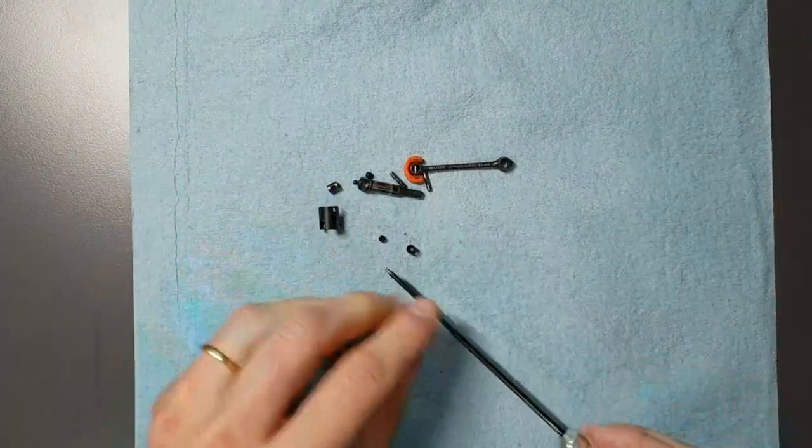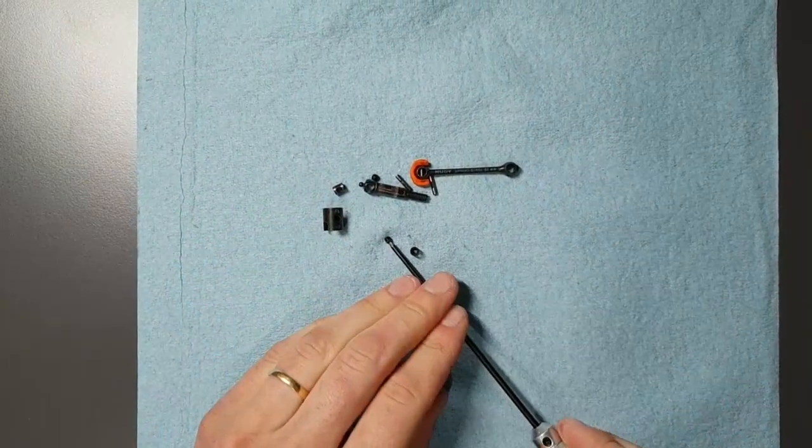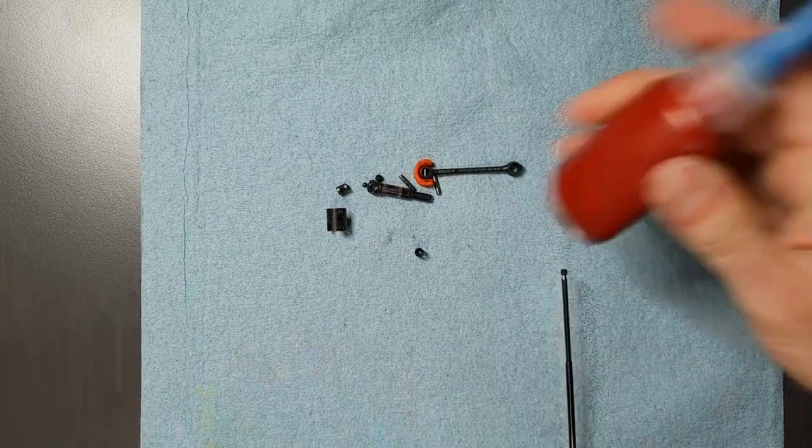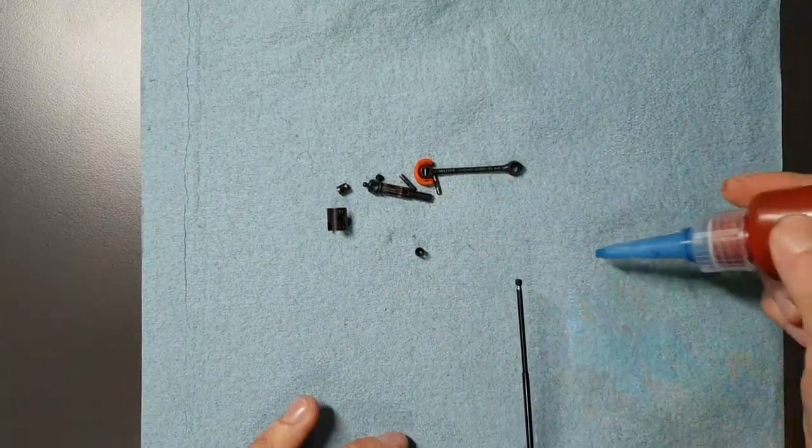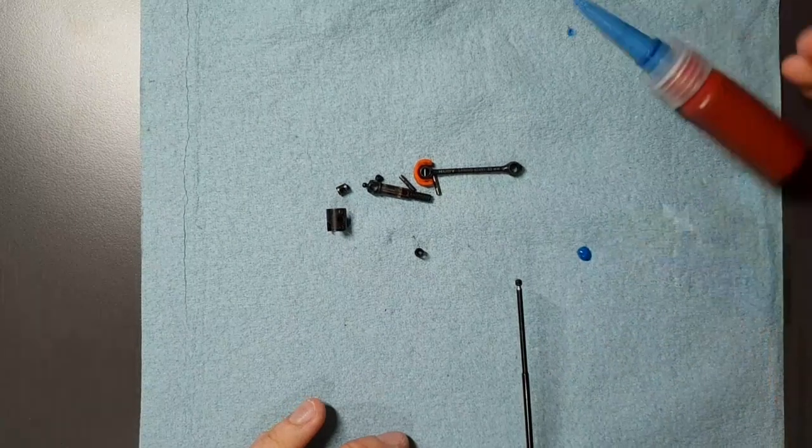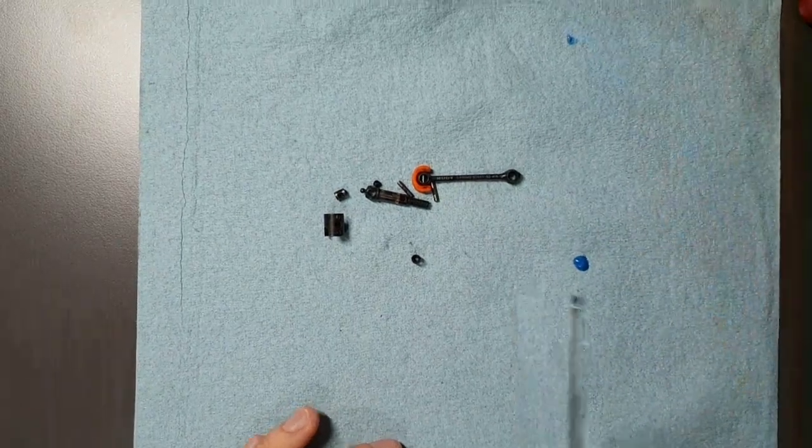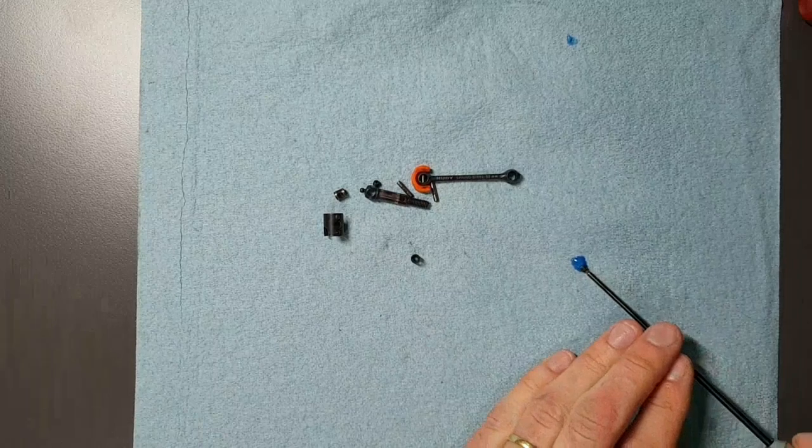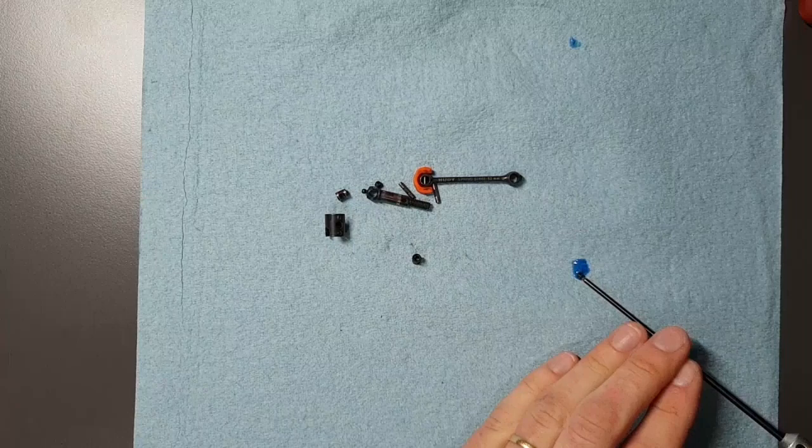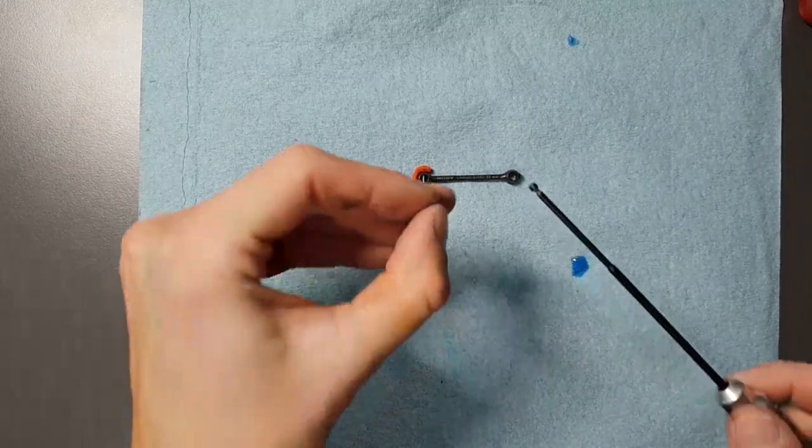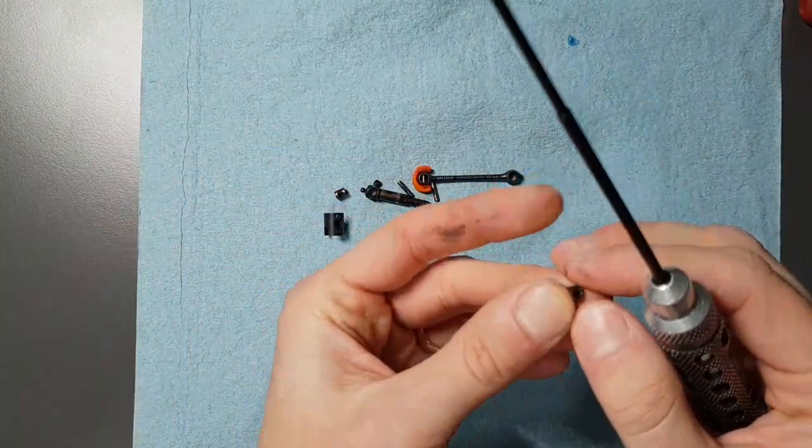So we start with the set screws. I'm gonna use a medium strength Loctite threadlock that I'm gonna apply to these screws. It's important not to use too much. Because if you get threadlock onto the moving parts of the ECS, it's gonna make it bind up. So it's very important to not use too much.